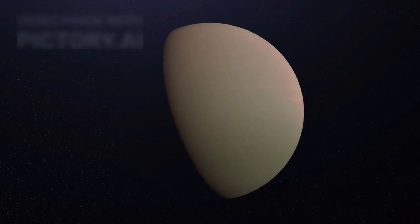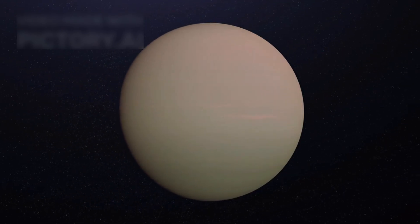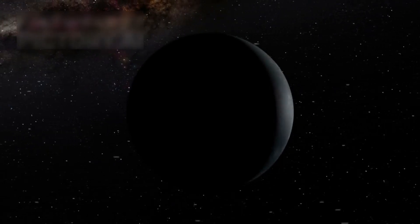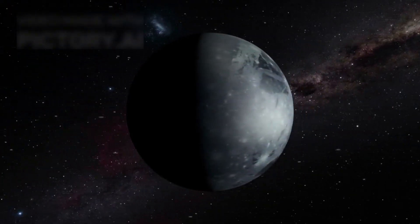Its orbit is extremely elliptical, unlike the smooth path of planets like Earth. It takes Pluto a huge 248 Earth years to orbit the Sun, which means it moves very slowly across the universal landscape.